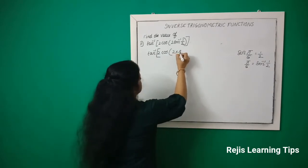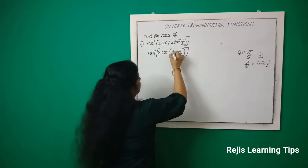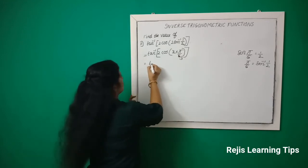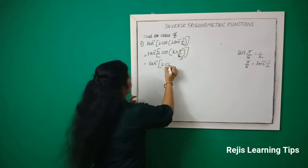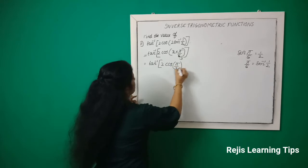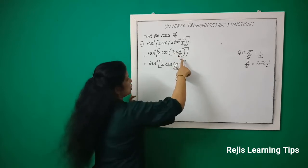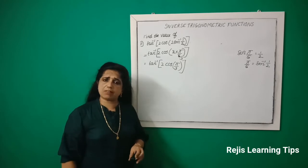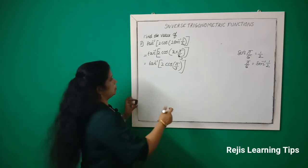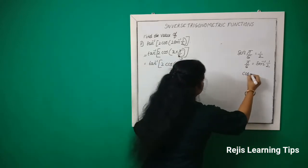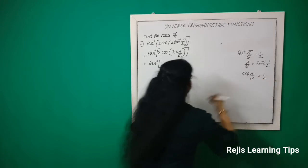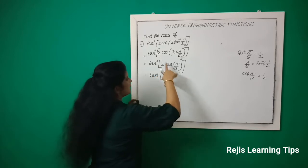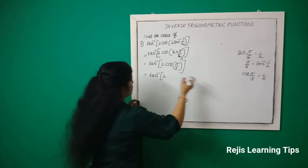So we can write here π/6. We can cancel the 2 and 6, then we will get 3. That is equal to tan inverse of cos(π/3). Now, cos(π/3) is equal to 1/2.